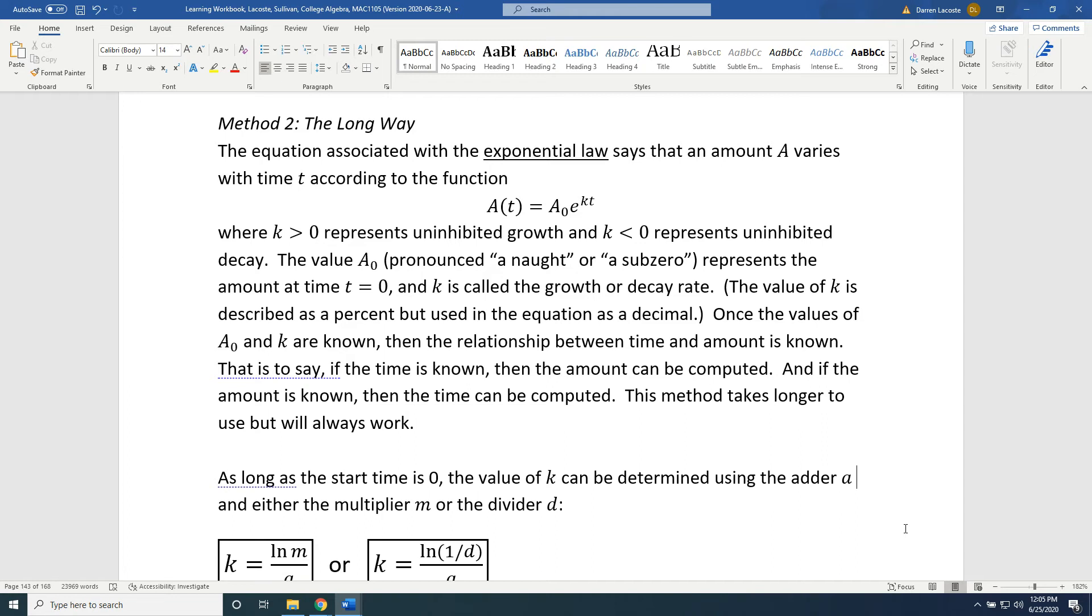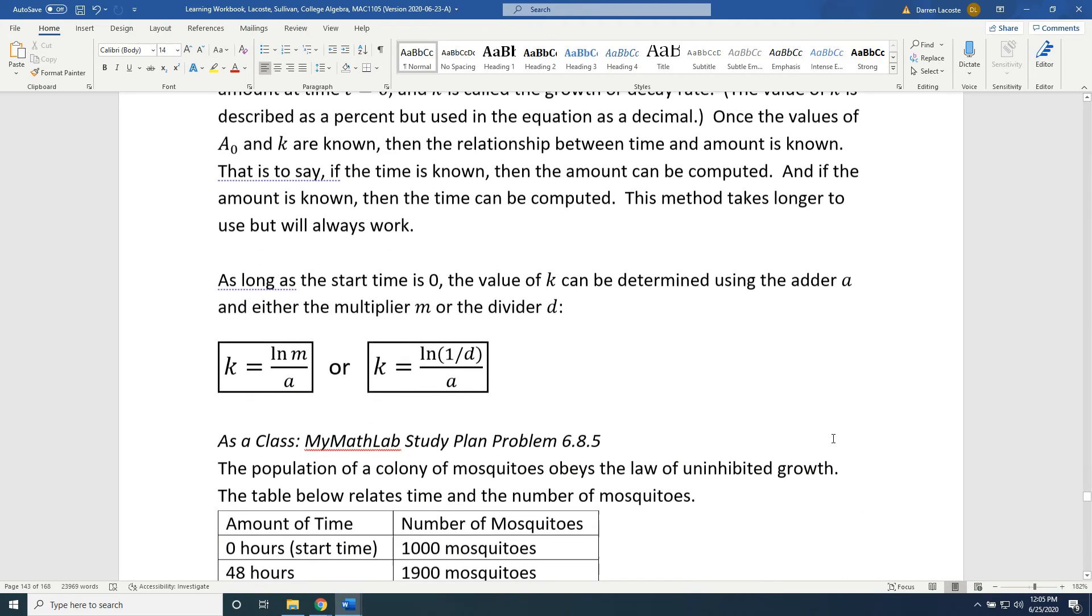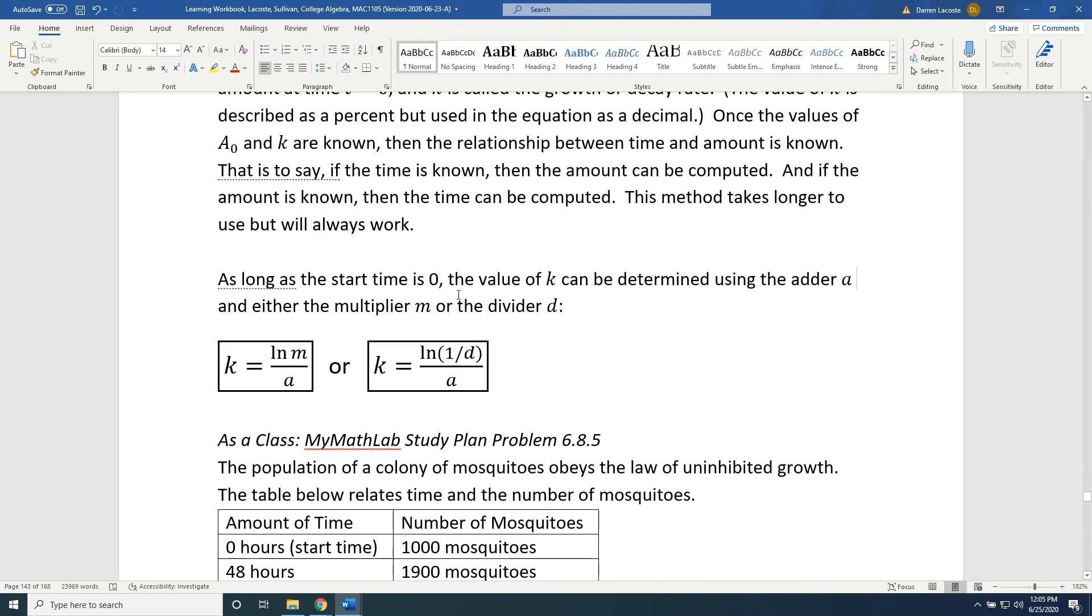Those are all of my comments. Let's move on now to our next paragraph. As long as the starting time is 0, the value of k can be determined using the adder a and either the multiplier m or the divider d. Here are two formulas which are going to come in very handy. k = ln(m)/a. Or, in the case of decay, k = ln(1/d)/a.